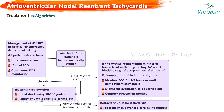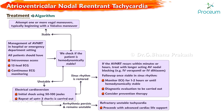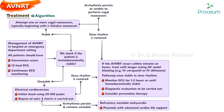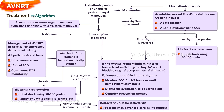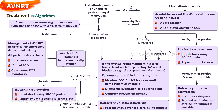If the patient is hemodynamically stable, attempt one or more vagal maneuvers, typically beginning with the Valsalva maneuver. If arrhythmia persists or vagal maneuvers cannot be performed, administer intravenous adenosine. If arrhythmia persists, administer second-line AV nodal blockers such as intravenous beta blockers or intravenous non-dihydropyridine calcium channel blockers. If arrhythmia still persists, perform electrical cardioversion with initial shock of 50 to 100 joules, repeat up to 3 shocks. If arrhythmia persists and remains unstable, it is refractory unstable tachycardia and treatment proceeds with advanced cardiac life support.